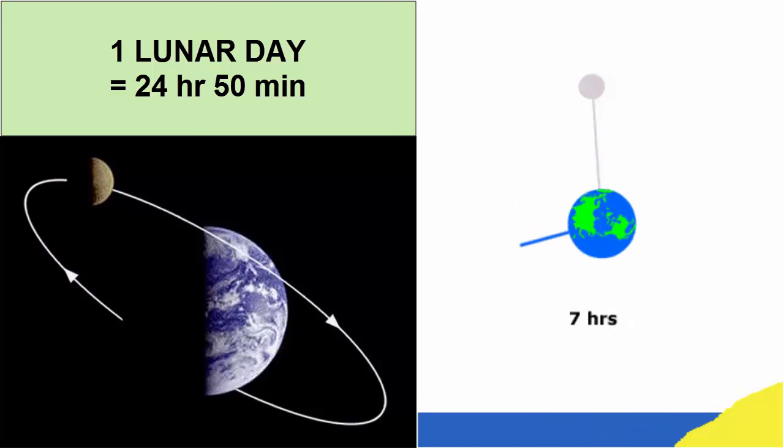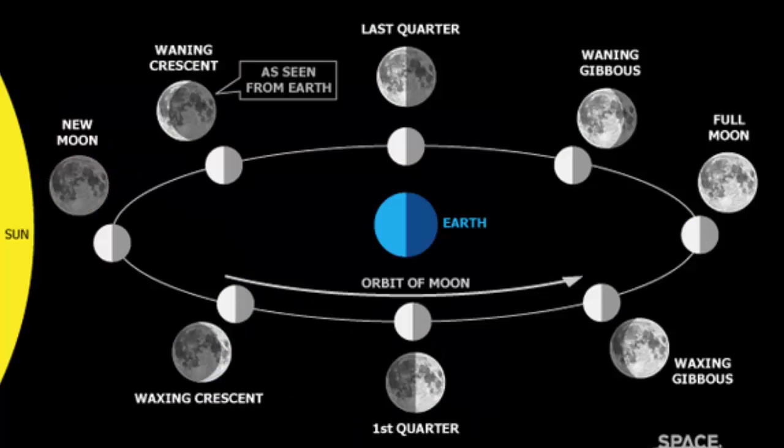24 hours and 50 minutes is a lunar day. In addition, the two-week cycle of neap and spring tides exactly matches the phases of the Moon as the Moon completes its orbit around the Earth. The Moon is the main agent causing tides on our planet. How?